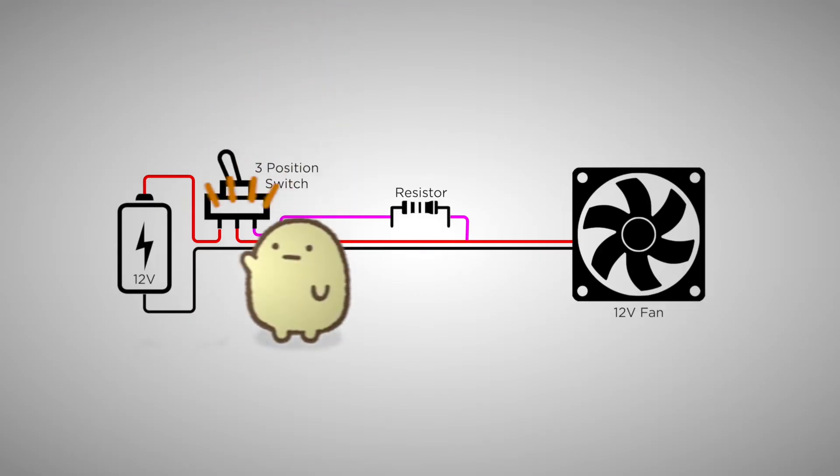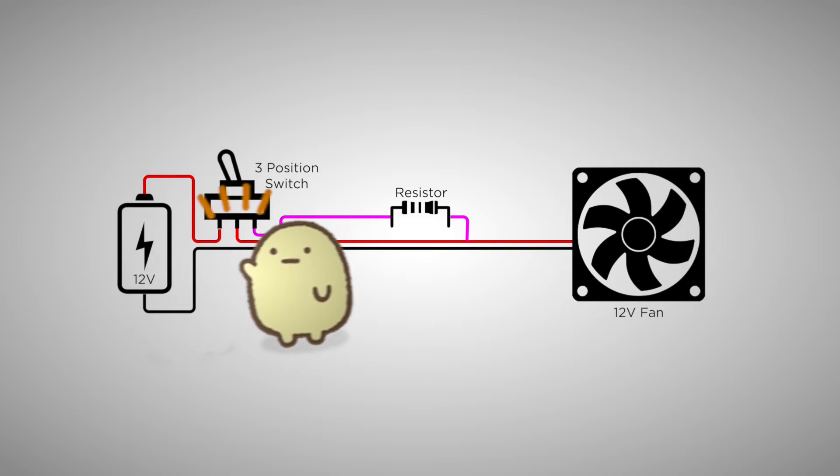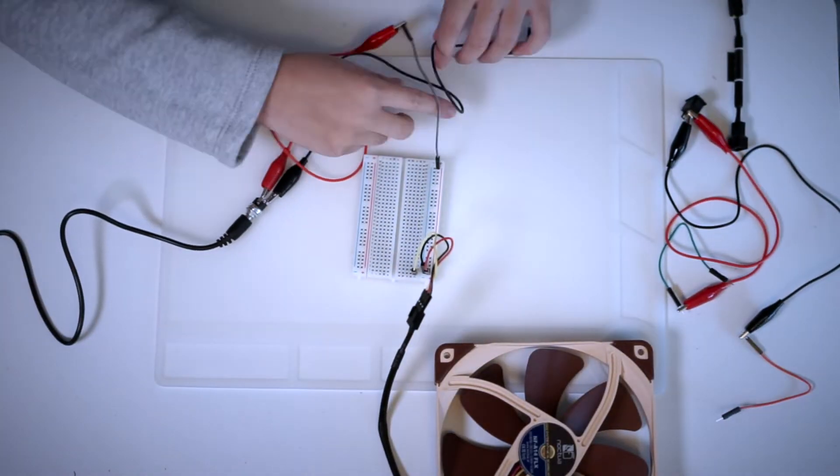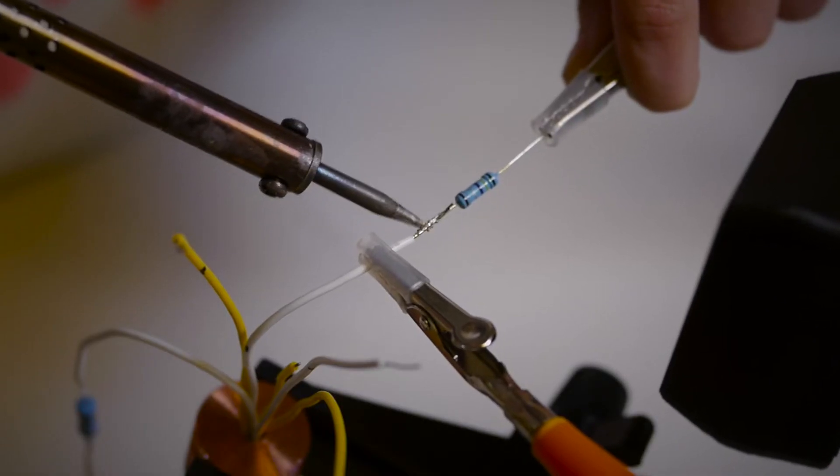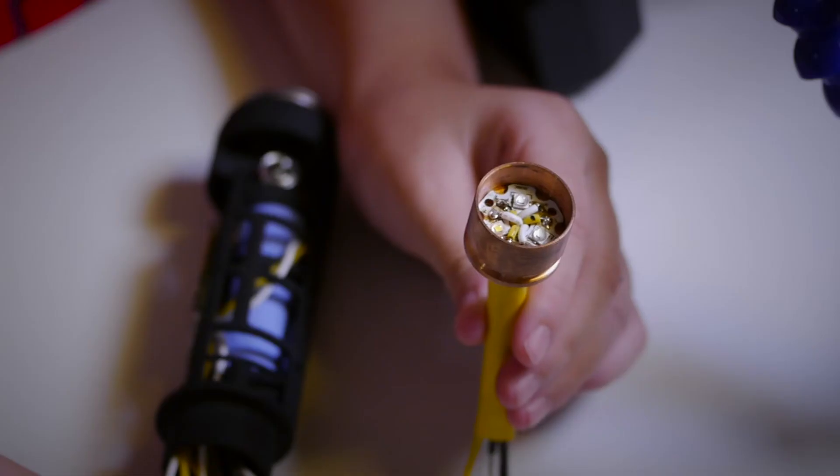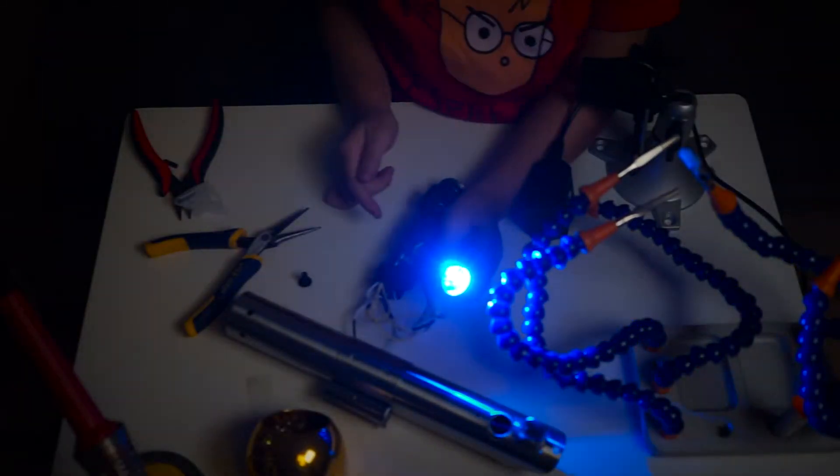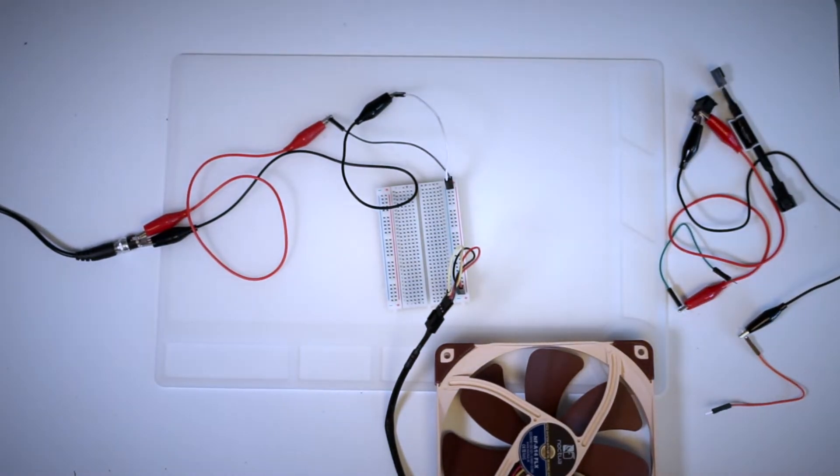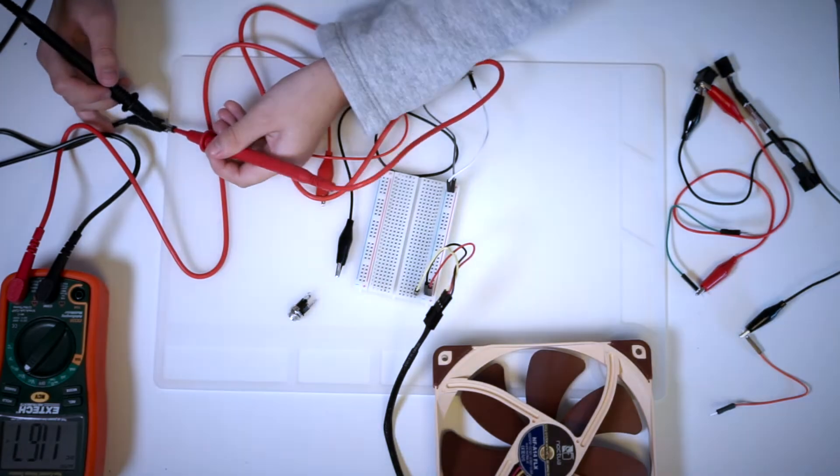I used a three position switch so that I could have two different speed settings on my fan. Like my lightsaber project where I used different resistors to control the LEDs, I will use a resistor to control the power going to the fan. I was able to reuse the original resistor cable that came with the fan.